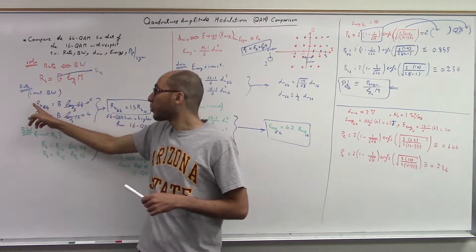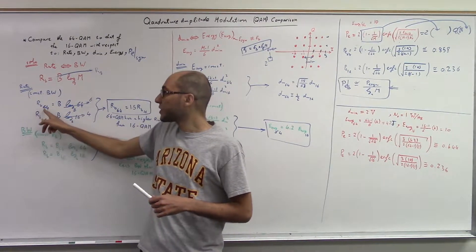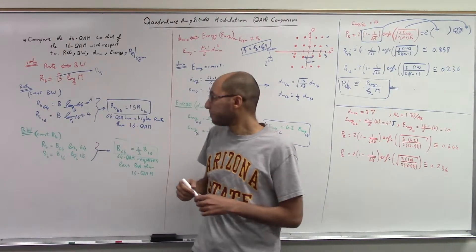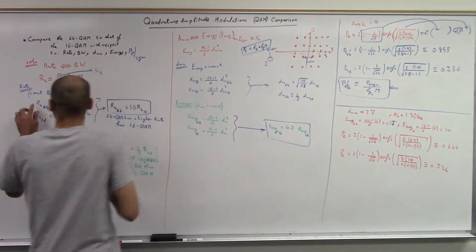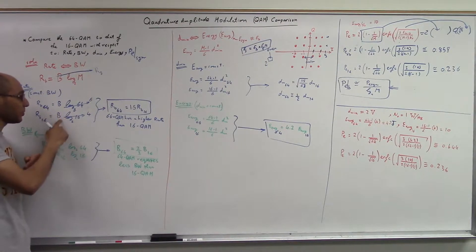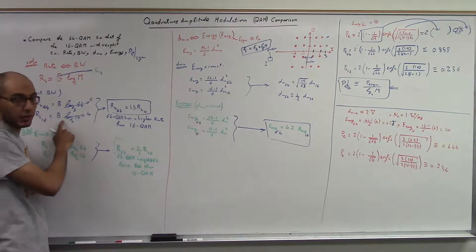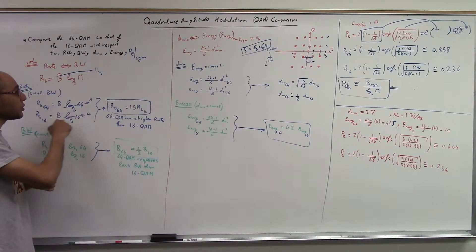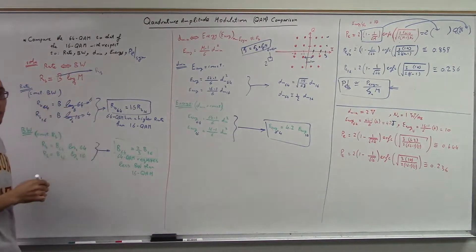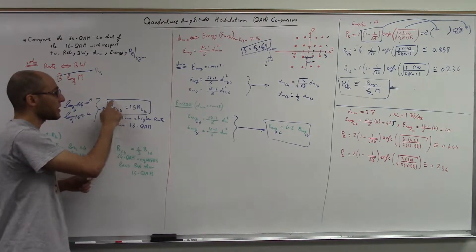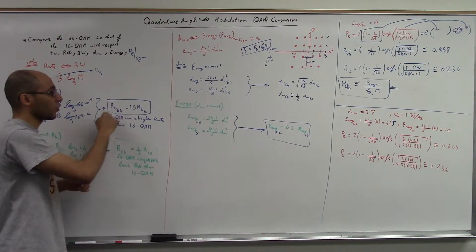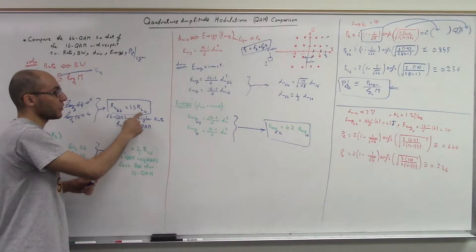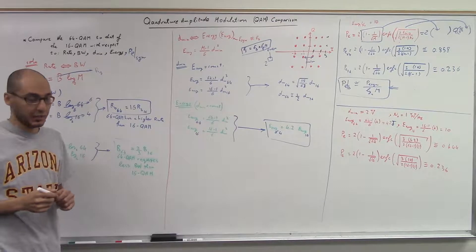If I want to compare the rate, I write the equation twice — once for 64-QAM and once for 16-QAM. Since I want to fix the bandwidth, I set the bandwidth of 64-QAM equal to the bandwidth of 16-QAM. Dividing the two equations, I end up finding that 64-QAM has a rate one and a half times that of 16-QAM.